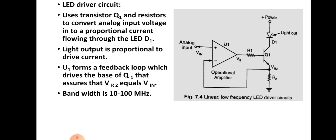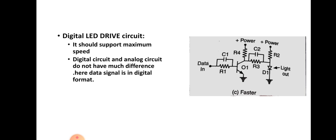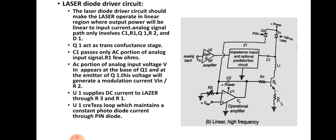This is the analog LED driver circuit, and this is the digital LED driving circuit. The only difference is that instead of analog signals, digital signals are used. This circuit should be designed to support the maximum speed. Next is the laser diode driver circuit, which should make the laser operate in the linear region where the output power is linear to the input current.